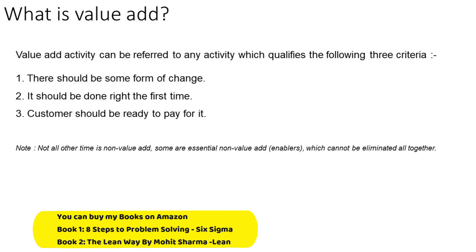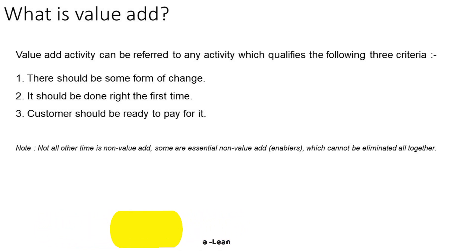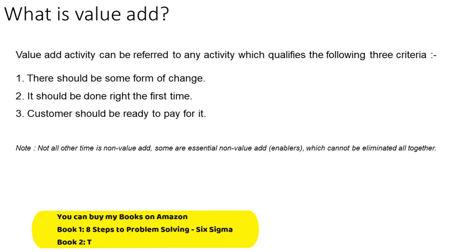A value-added activity must meet three criteria: it should bring a change in shape or form, it should be done right the first time, and the customer should be ready to pay for it. For example, getting wood from the fourth floor to the ground floor workshop is a non-value-added activity — it doesn't change the shape or form. Marking, cutting, and nailing the wood are value-added activities. Rework is not value-added, and any activity the customer is not willing to pay for — even if it adds form — is also non-value-added.